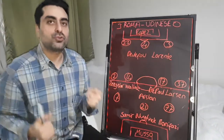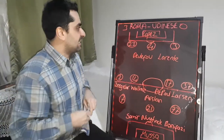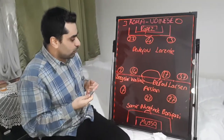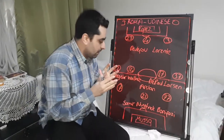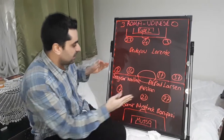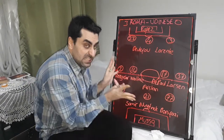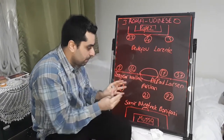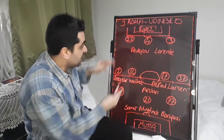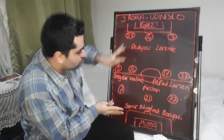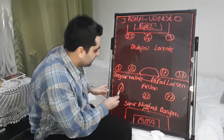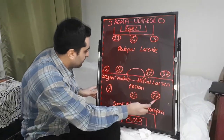Now about Udinese's tactics. Udinese started the game very poorly, playing defensively from the beginning. Roma made a lot of pressure on the Udinese defense with Pellegrini,